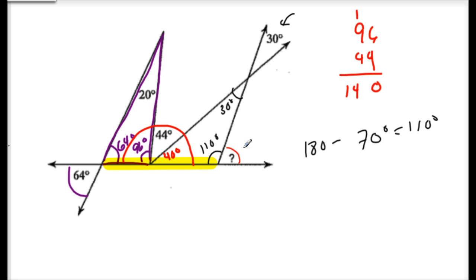I'm not done yet — I still want this final angle. You subtract from 180 and get 70. This is a straight line, so this angle here must be 70 because these two angles together are supplementary and must give 180 degrees.